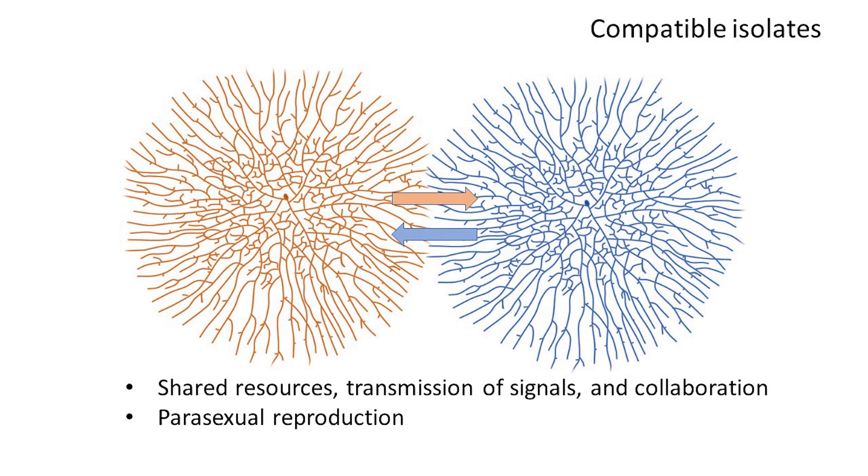Moreover, there is a chance of parasexual events during which fungi can exchange genetic information without the formation of sexual structures or meiotic division. Such processes are likely to be important for fungi that have limited opportunities for sexual reproduction or are truly asexual.